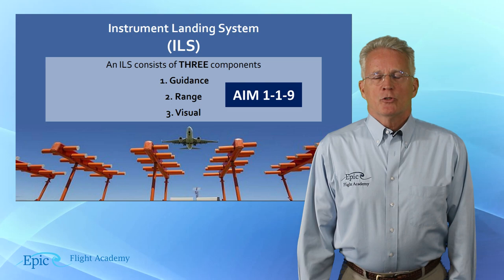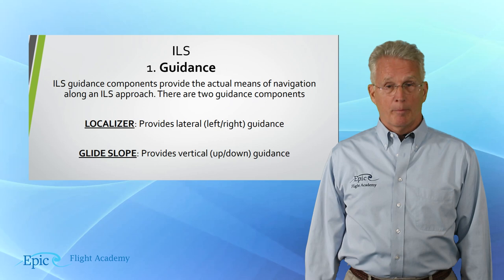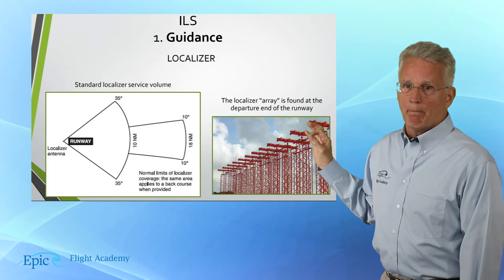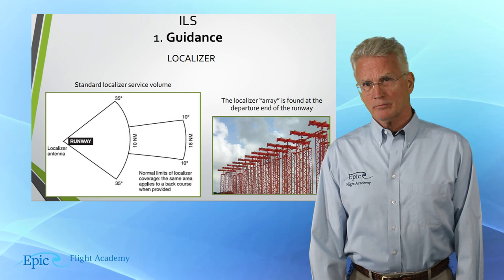In terms of guidance, we have what we call a localizer, which provides lateral or left-right guidance, and a glide slope which provides vertical or up-and-down guidance. If you take a look at this picture and this diagram, the picture is what we call a localizer array — this is the localizer antenna. You might have seen these at some airports; they are at the departure end of the runway.